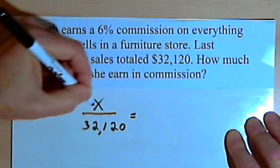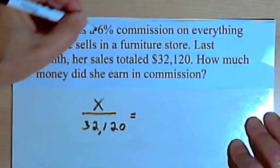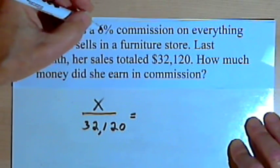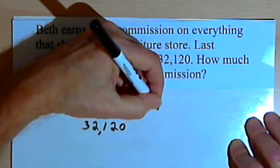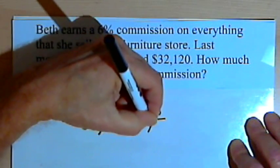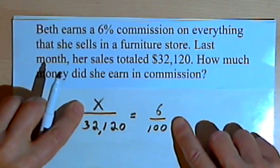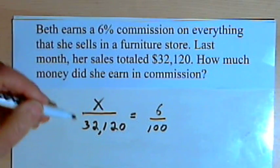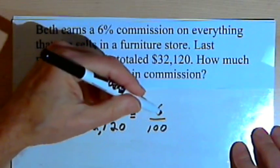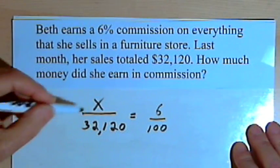We're going to set that fraction, or ratio, equal to 6%, her commission as a fraction. So that's going to be 6 over 100. So now I've got an equation, or proportion, x over 32,120 equals 6 over 100. And I want to solve for x.